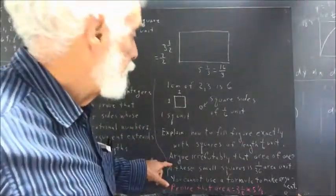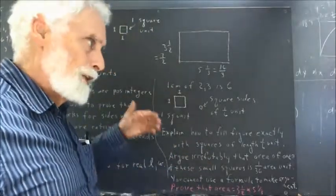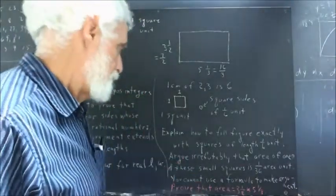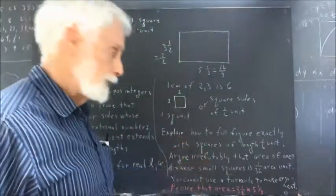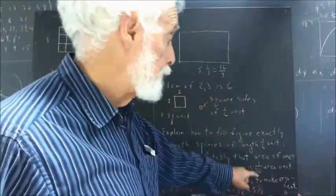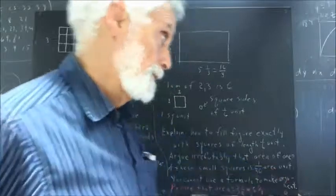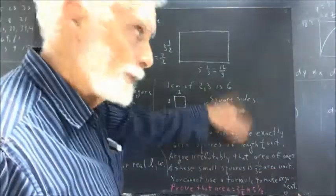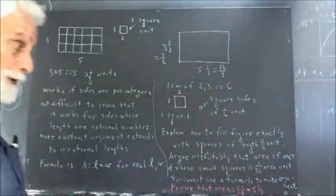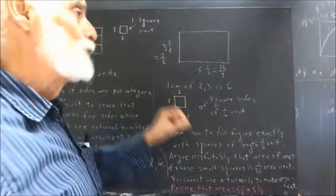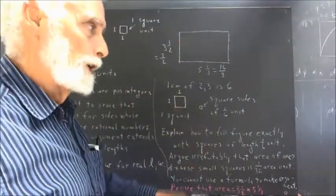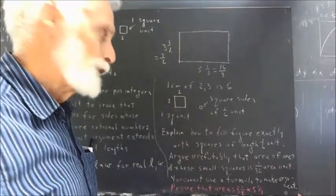Then I want you to argue irrefutably, airtight argument that no lawyer or mathematician could challenge successfully, that the area of one of these small squares is one-thirty-sixth of an area unit. Now, you're going to want to say, well, one-sixth times one-sixth is one-thirty-sixth. That's the formula. Well, we're trying to prove the blame formula. You can't use the formula for finding the area to prove the formula for finding the area. So you can't do that.